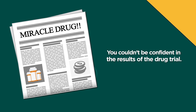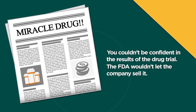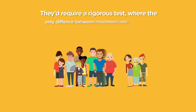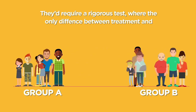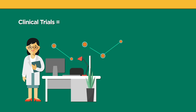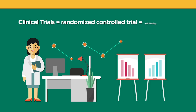You couldn't be confident in the results of the drug trial, and the FDA wouldn't let the company sell it. It'd require a rigorous test where the only difference between treatment and control groups was the medication. The FDA calls these clinical trials, or randomized control trials, but it's also a version of A-B testing.